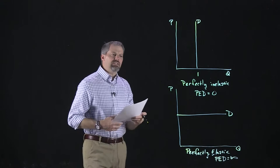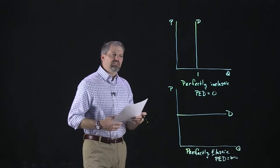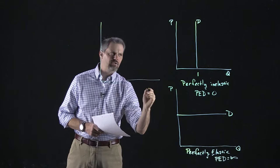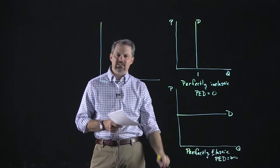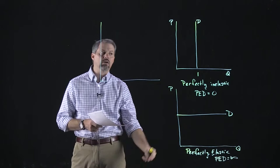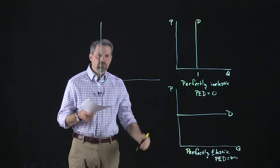What we see is that elasticity tells us something about the steepness of the demand curve. Most demand curves we'll think about in this class are going to be downward sloping — not perfectly inelastic or perfectly elastic. The flatter the demand curve, the more elastic demand is. Here you respond infinitely much; here you don't respond at all. The more steep the demand curve is, the more inelastic demand is.